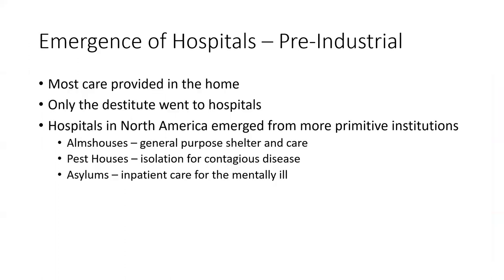In the pre-industrial period, we see the emergence of hospitals. Most care through the 1900s was provided at home. Only the destitute and those without families went to hospitals. Hospitals in North America emerged from those really primitive institutions — almshouses. That great general institution for care eventually became kind of three different forms: almshouses for the homeless, pest houses for people with disease who we tried to isolate, and asylums that emerged for the care of the mentally ill. Medicine was low tech and low value — couldn't do much, wasn't very valuable, you just basically tried to make people comfortable.